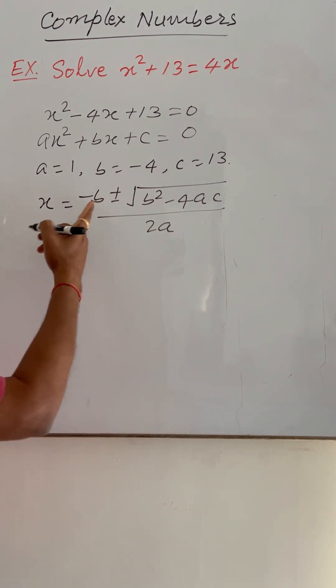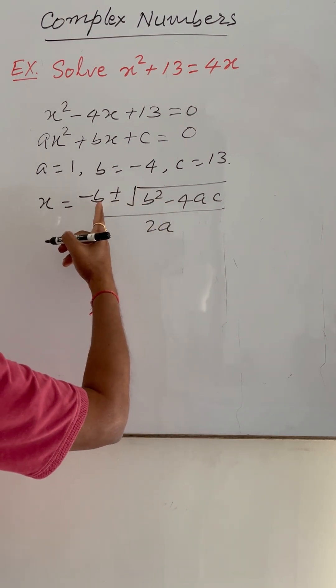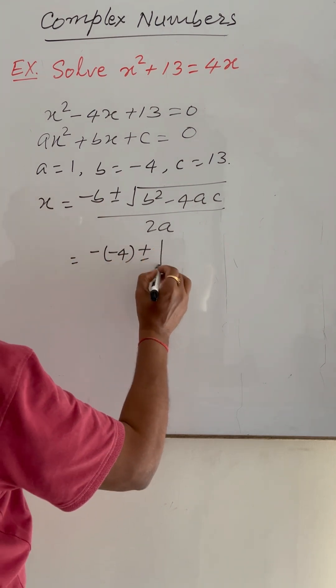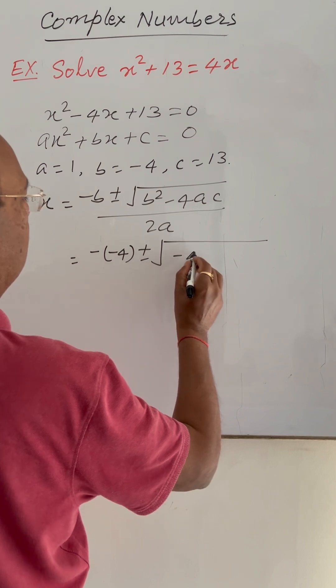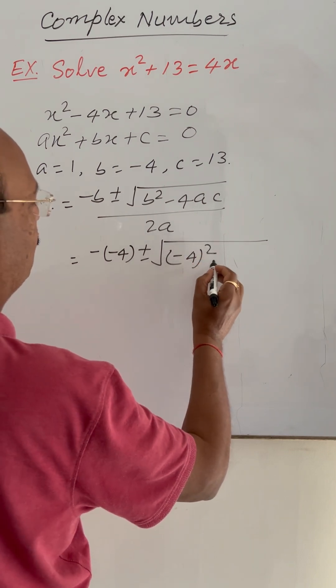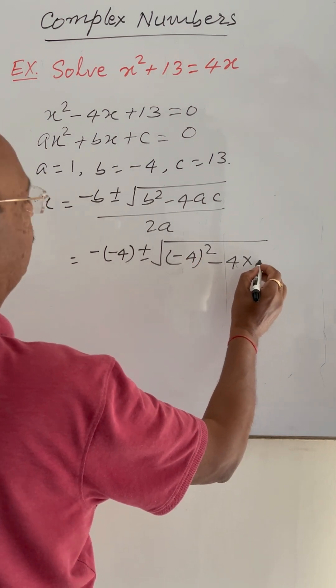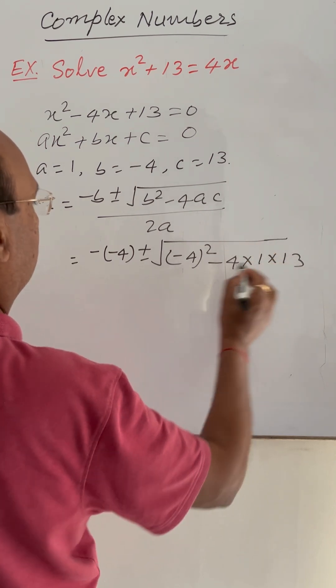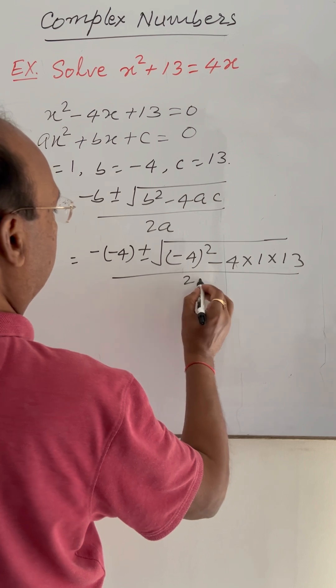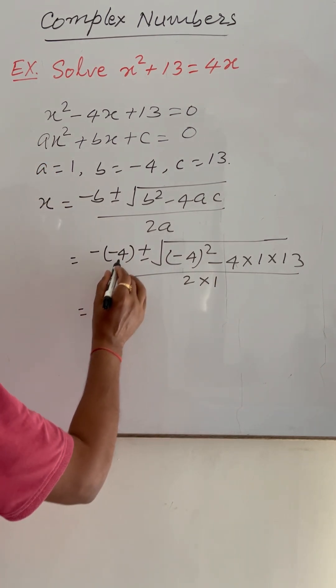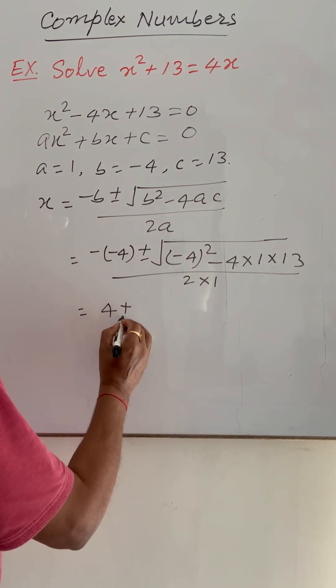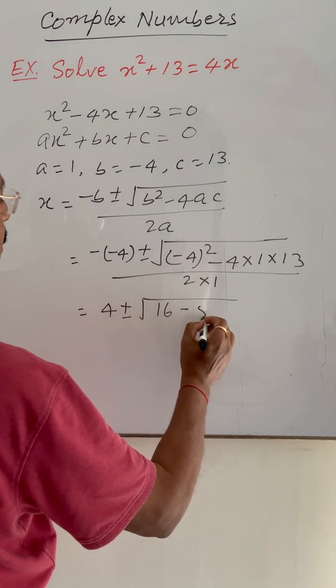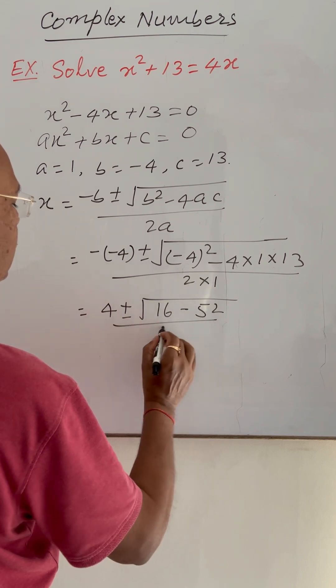This is equal to putting these values minus of b. So b is minus 4 plus minus root over b squared, minus 4 squared minus 4 into a is 1 into c is 13 divided by 2a, so 2 into 1. This is equal to 4 plus minus root over 16 minus 52 divided by 2.